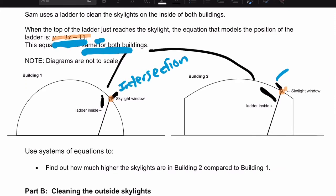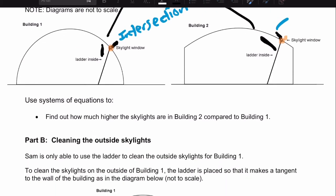And then we took the y value, the height in building 2 minus the height in building 1, the y value. To find the difference and then obviously find out how much higher the skylights are in building 2 compared to building 1.